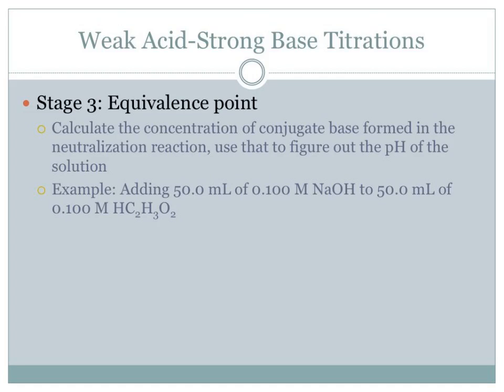At the equivalence point — for example, if you add 50 milliliters of 0.1 molar NaOH to 50 milliliters of 0.1 molar acetic acid, you've got the same amount of acid and base, so that's the equivalence point. For a strong acid/strong base titration, the H⁺ combines with OH⁻ to make H₂O, which has a pH of 7 — it's neutral.